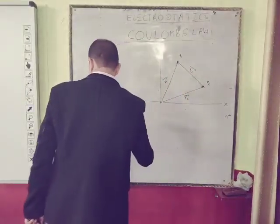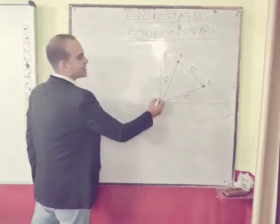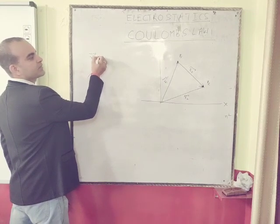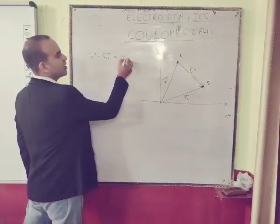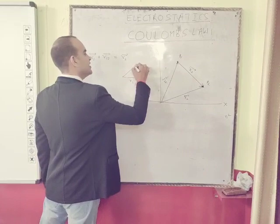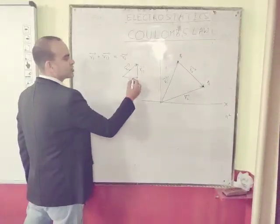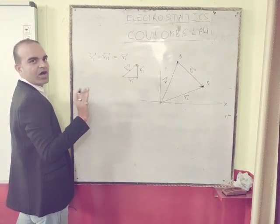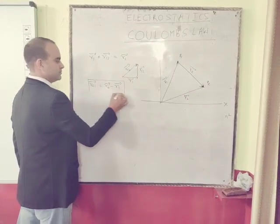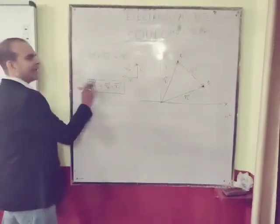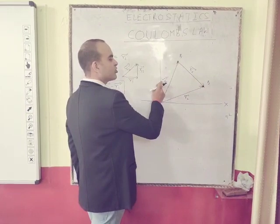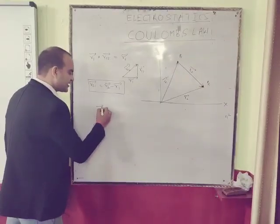Q1 will apply a force on Q2, and Q2 will apply a force on Q1, and both forces will be equal. Looking at their vector sum: one vector is R1 and the other is R12, and their resultant vector is R2. So R1 + R12 = R2, because according to the law of parallelogram, R21 = R2 − R1.